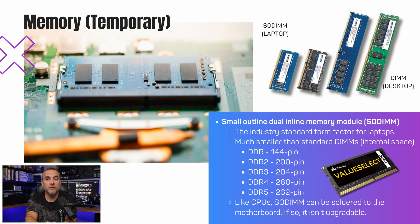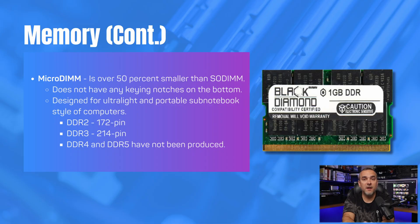A small outline dual inline memory module, or SODIMM, is the industry standard form factor for laptops, being much smaller than standard DIMMs to fit in the limited internal space that laptops offer. SODIMMs come in various pin configurations: DDR with 144 pins, DDR2 with 200 pins, DDR3 with 204 pins, DDR4 with 260 pins, and DDR5 with 262 pins. Similar to CPUs, SODIMMs can be soldered directly onto the motherboard, which means they are not easily upgradeable. Micro DIMM is a type of memory module that is more than 50% smaller than SODIMM, has no keying notches, and is designed for ultralight portable notebooks. Micro DIMM modules for DDR2 have 172 pins and DDR3 have 214 pins; DDR4 and DDR5 Micro DIMM modules have yet to be produced.